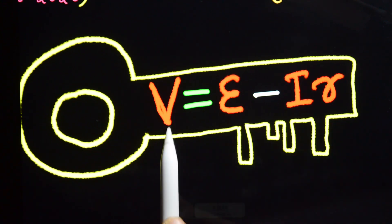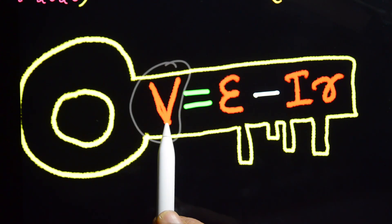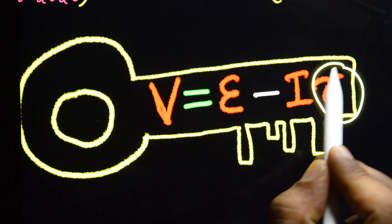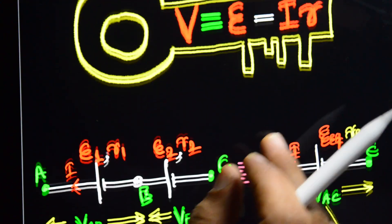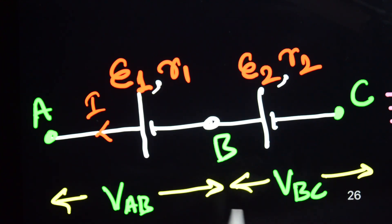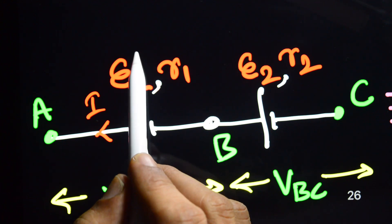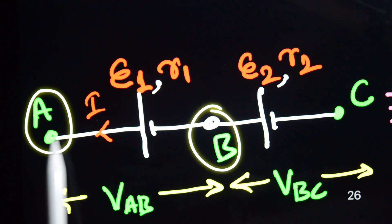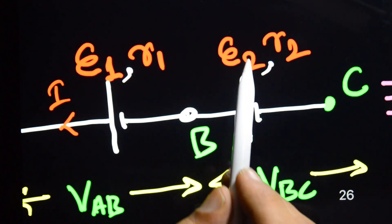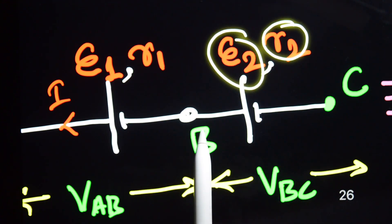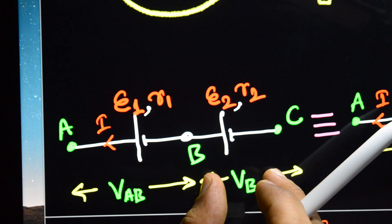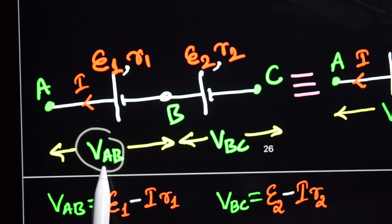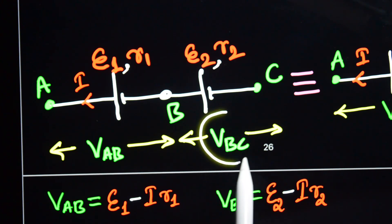The key equation to write for this topic is: V equals terminal potential difference equals EMF of the cell minus I into r, where small r is the internal resistance of the cell. Suppose a cell is connected end-to-end. The first cell has EMF E1 and internal resistance R1, connected between points A and B. The second cell has EMF E2 and internal resistance R2, connected between points B and C. The potential difference across the first cell is VAB and across the second cell is VBC.